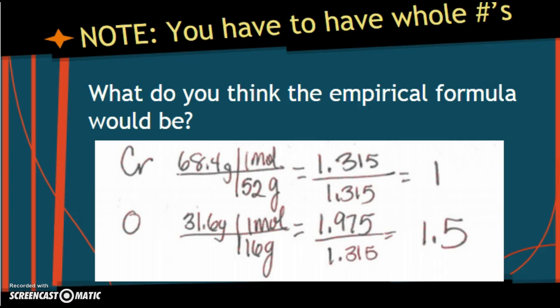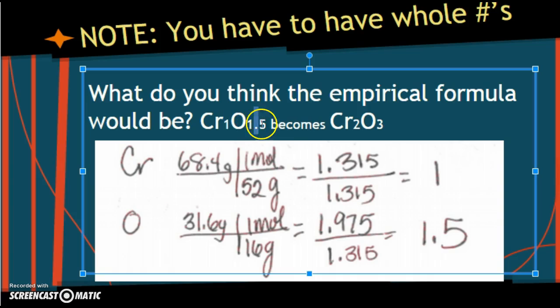So what do you think we're going to do? Instead of having it like this, we're going to double it. I did 1 times 2 is 2, 1.5 times 2 is 3. So this would be my empirical formula.